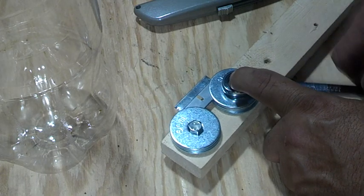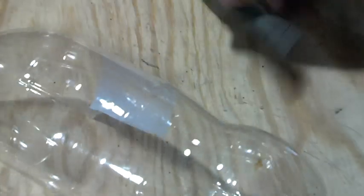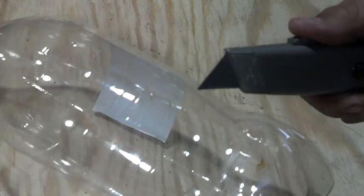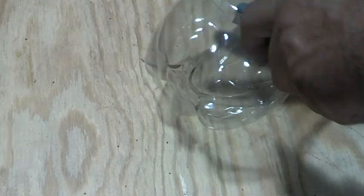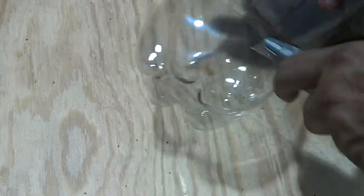All right, next you're going to take your bottle and just cut a straight line. I used the line already in the bottle, so I just cut it flat right there so it would ride level on the board.